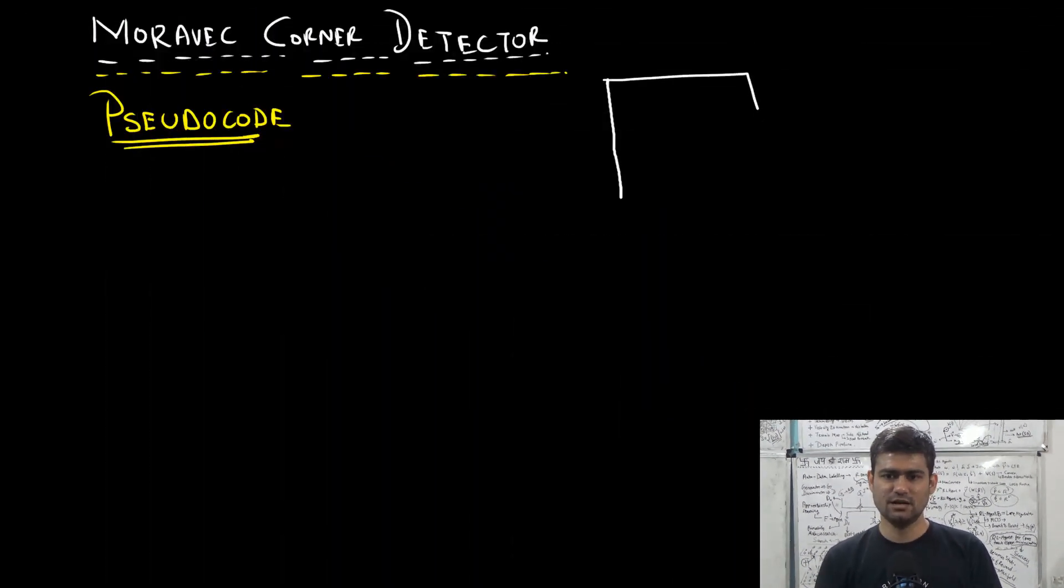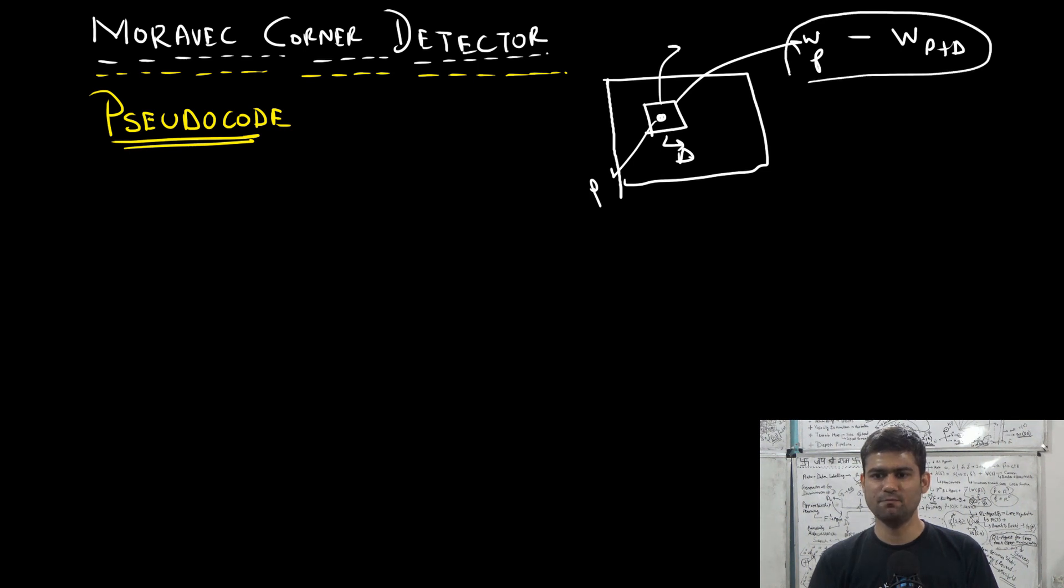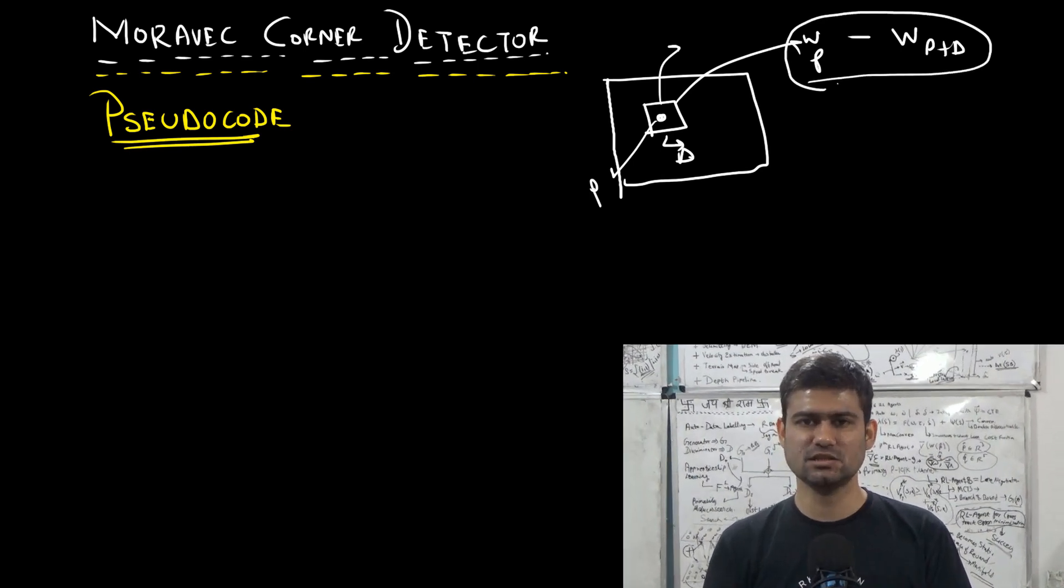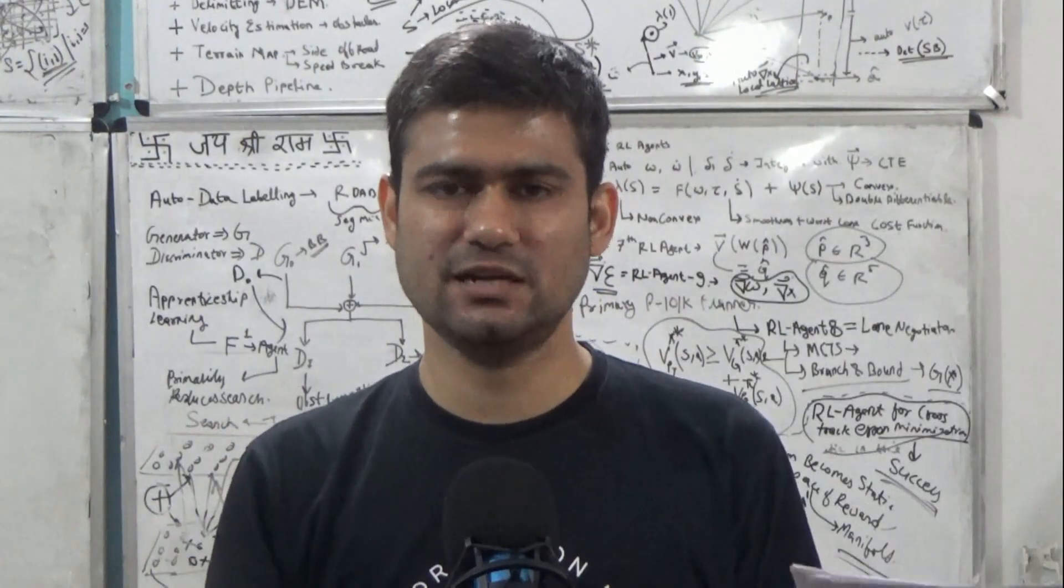Let's suppose if a particular point in an image is a corner point and if you take a patch around that point and if you shift this patch by small amount delta, then the patch at pixel location P and the patch shifted by delta, if we take the differences of all the pixels in these two patches, then this difference would be significant.